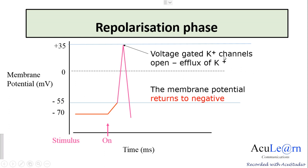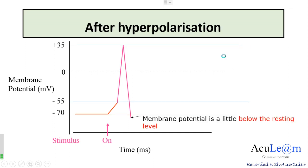The efflux of potassium continues even after the membrane potential comes back to the resting state, causing the membrane potential to go a little below the resting level — becoming more negative, around minus 72 millivolts. This phase is called the after-hyperpolarization phase. A little later, the voltage-gated potassium channels close.